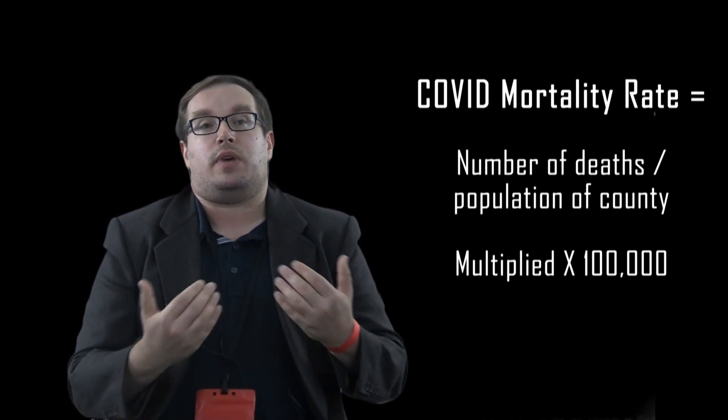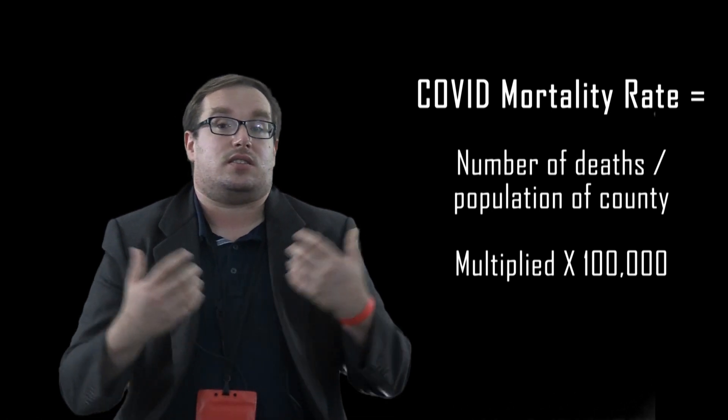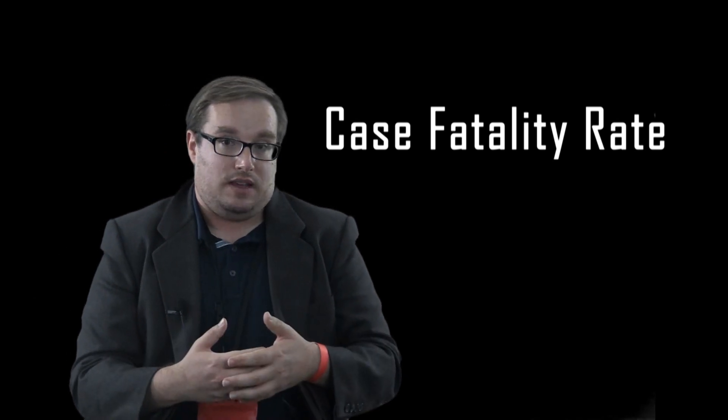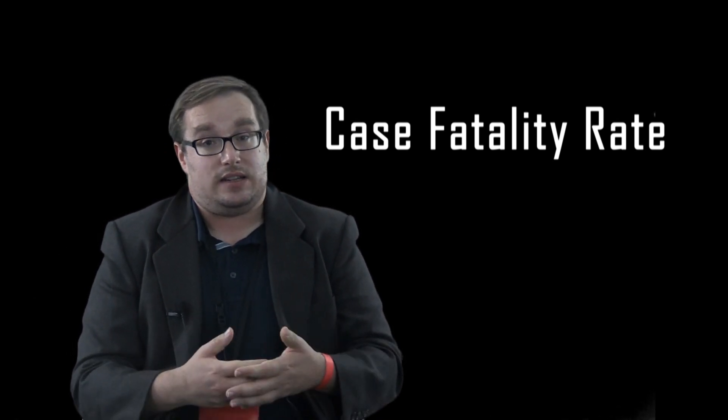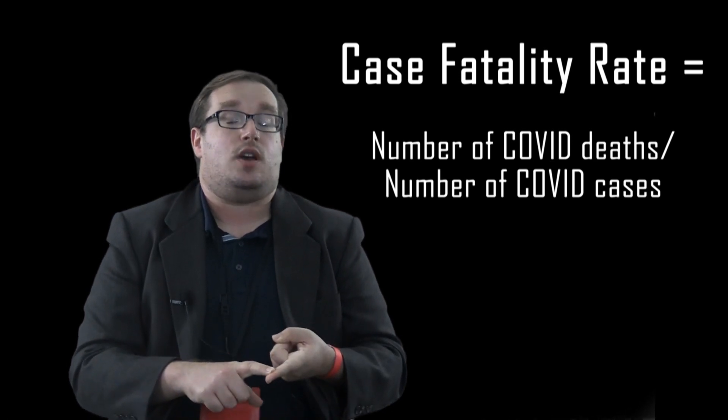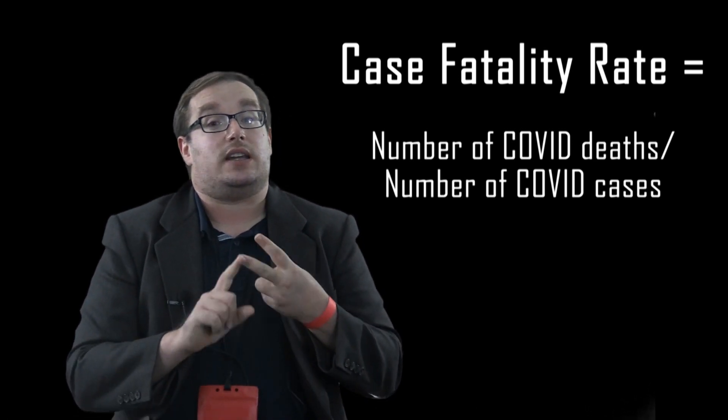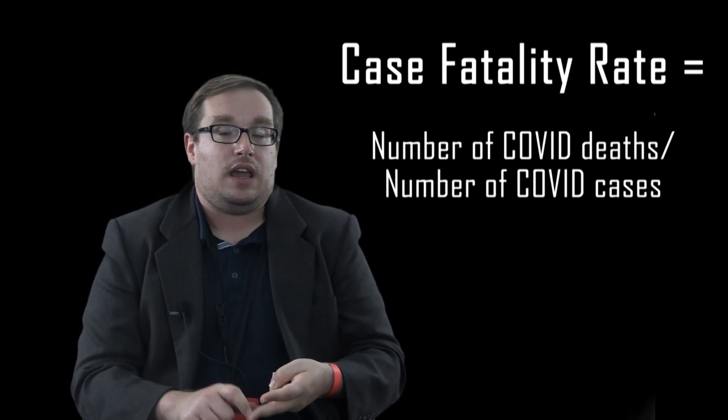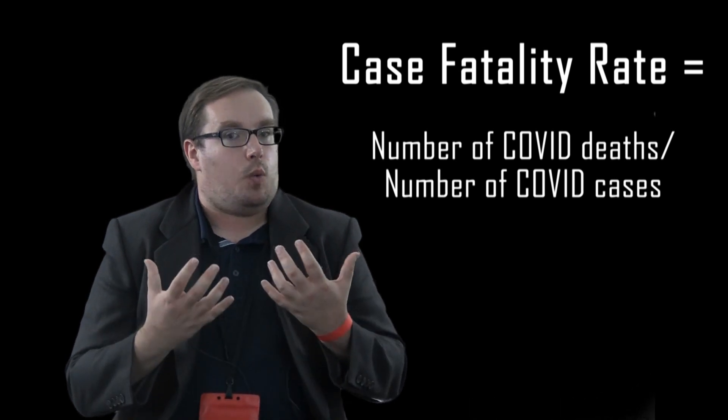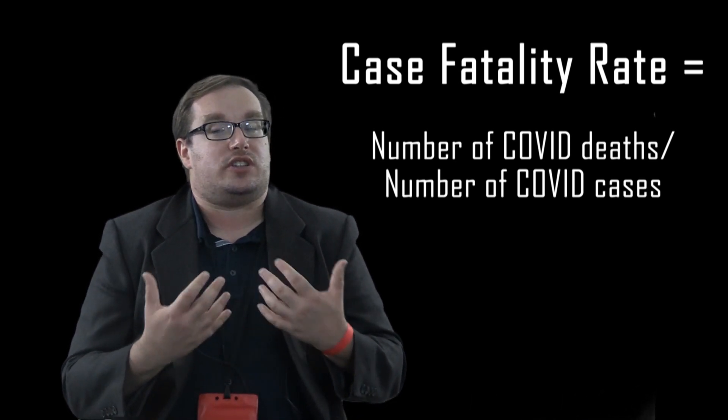The second one is what's called the case fatality rate, and the case fatality rate is the number of people who die from the disease over the number of people who are diagnosed with the disease. This is usually what people want when they're asking about mortality rates.